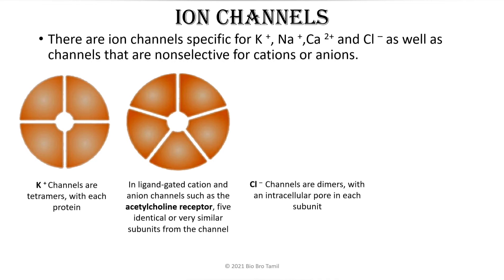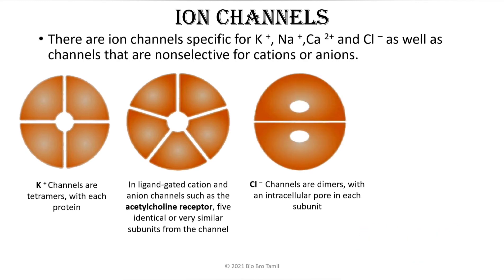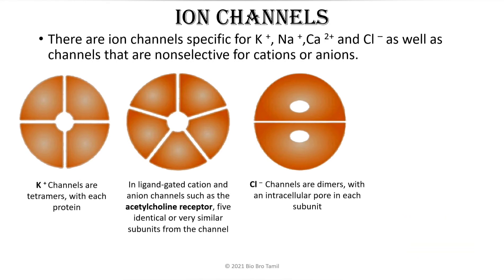One protein equals one subunit. If we look at the chloride channel, there are two subunits. The structure has only two proteins. We can see exchange pores in this channel. In the first two ion channel types, we have subunits arranged around the center of the channel, forming a pore at the center of the proteins.